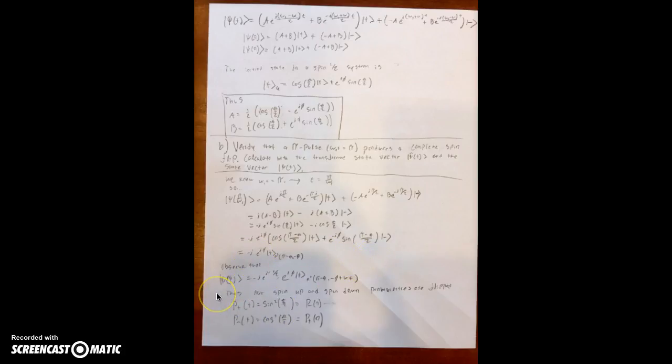Our spin-up and spin-down probabilities are flipped. The probability of spin up is equal to sine squared theta over 2, which ends up being equal to the probability of spin down at t equals zero, and vice versa.